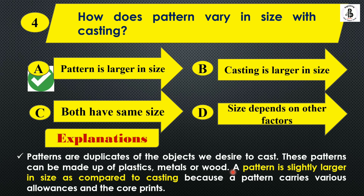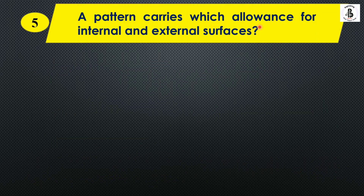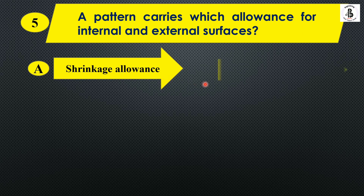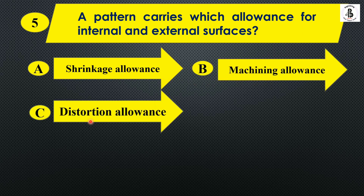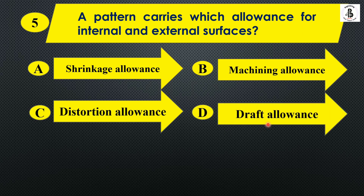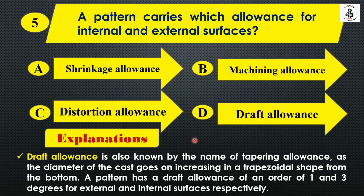Question five: A pattern carries which allowance for internal and external surfaces? Option A: Shrinkage allowance, Option B: Machining allowance, Option C: Distortion allowance, Option D: Draft allowance. Draft allowance, also known as tapering allowance, accounts for the diameter of the cast increasing in a trapezoidal shape from the bottom. A pattern has a draft allowance of the order of 1 to 3 degrees for external and internal surfaces respectively. The answer is Option D: Draft allowance.